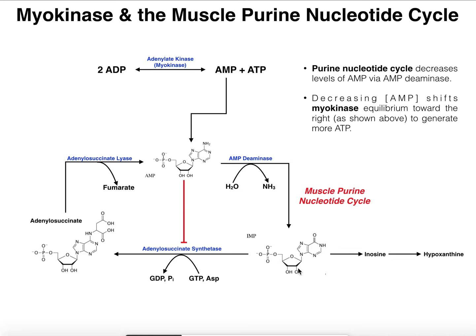From purine biosynthesis, we know what can happen to IMP. IMP is going to react with a series of two enzymes: the first is adenylosuccinate synthetase, which gives us adenylosuccinate. Then adenylosuccinate can be converted back into AMP by adenylosuccinate lyase. That brings us back to AMP. The question is, what really is the purpose of this cycle if we're just getting back AMP? Why would we go through it and waste a GTP?